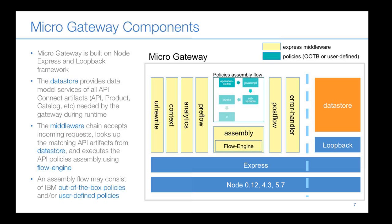Libra introduced the major components of the Micro Gateway, noting it's important to understand what the underlying components do so that when you see a log message indicating a problem, you have a better idea of which part of the gateway is at fault. The Micro Gateway is built on top of Node, Express, and the LoopBack framework — all components are implemented using pure JavaScript. There are two major components: the data store on the right and the gateway runtime on the left.